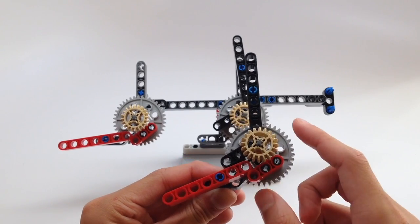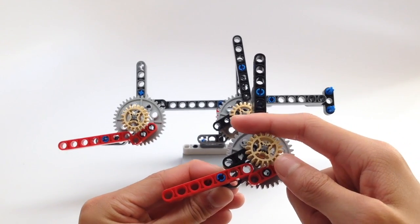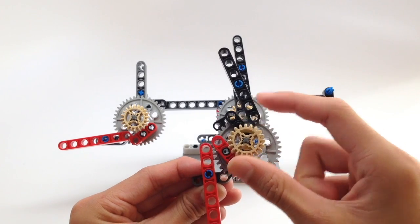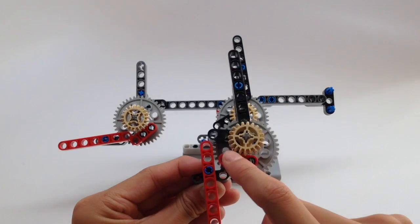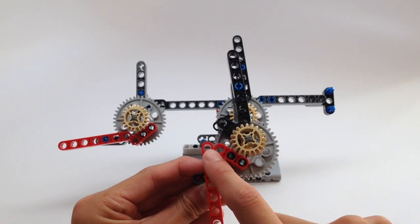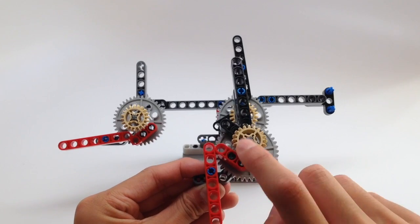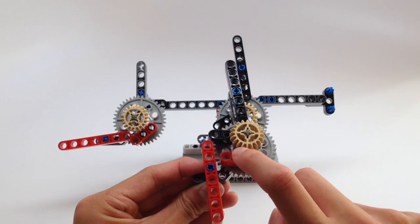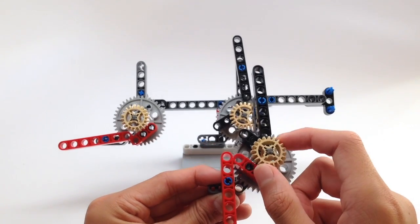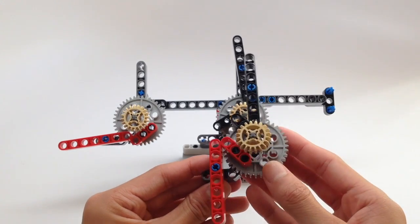So what happens is when we spin the yellow gear and we spin it a little bit, the little red beam hits out the larger beam. And notice I didn't spin it enough. I built it so that this top black beam isn't released yet.